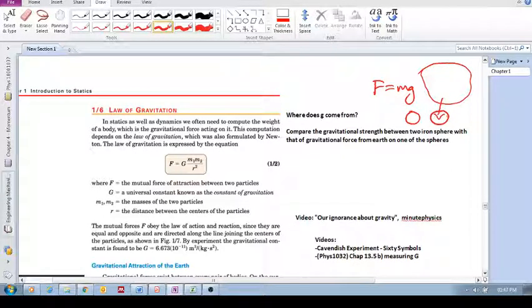All right, so what is this law of gravitation? Well, it's a universal law of attraction between two bodies, mass one and mass two. So this force between the two bodies is equal to G, which is our universal gravitational constant.